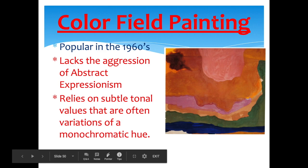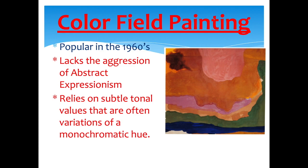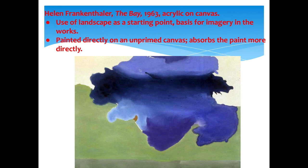Color Field Painting is popular in the 1960s. It lacks the aggression of Pollock and de Kooning and relies on subtle tonal values — changing from lights to darks — and variations of monochromatic color. Helen Frankenthaler creates 'The Bay' from 1963, acrylic on canvas. She uses landscape as a starting point for imagery, painting directly onto unprimed canvas, which absorbs the paint more directly. The painting is meant to look like land at the bottom and a bay area in the middle.